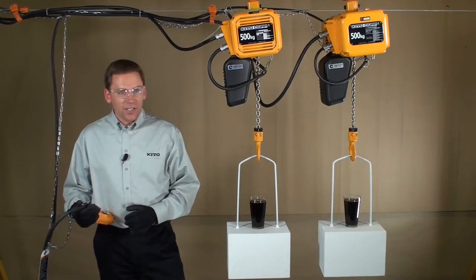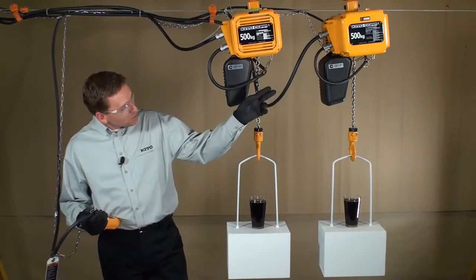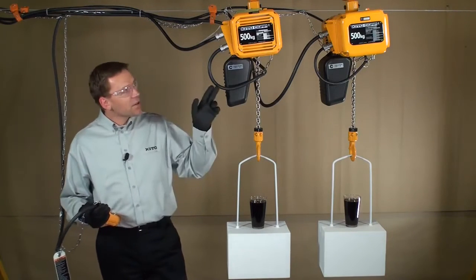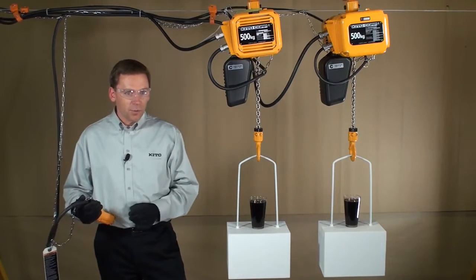We've got two electric chain hoists here. One is a single speed hoist equipped with contactors. The other is a dual speed hoist equipped with a keto VFD.